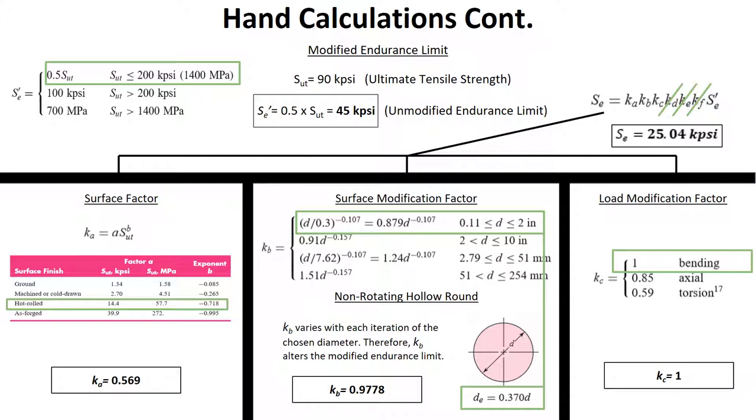In this next slide, we are solving for the modified endurance limit. In this formula, we have to solve for the KA value, which is the surface factor. Using the chart below, we recognize that we are using hot rolled and our KA value is solved in the formula. Then in the next portion, we solve for KB, and using our diameter, which is 1/8 inch, it is between 0.11 and 2 inches. So we use that formula there to determine our DE value, and from our DE value, we can solve for the KB value.